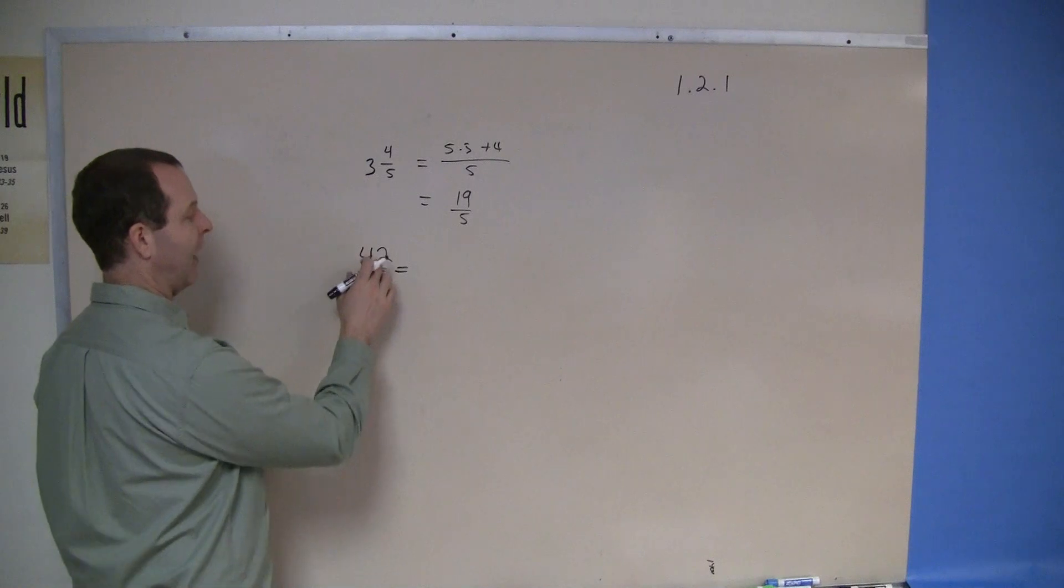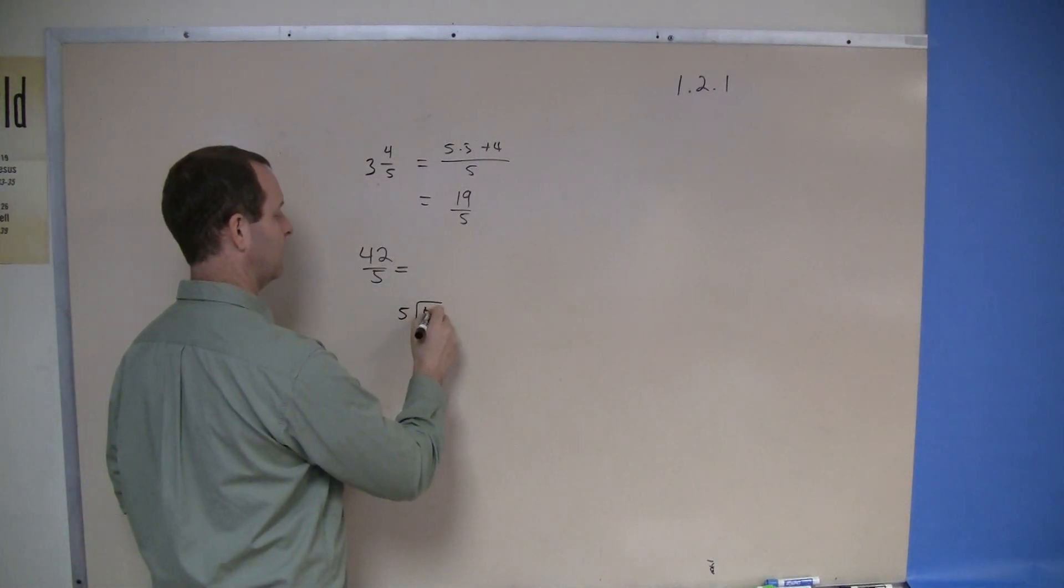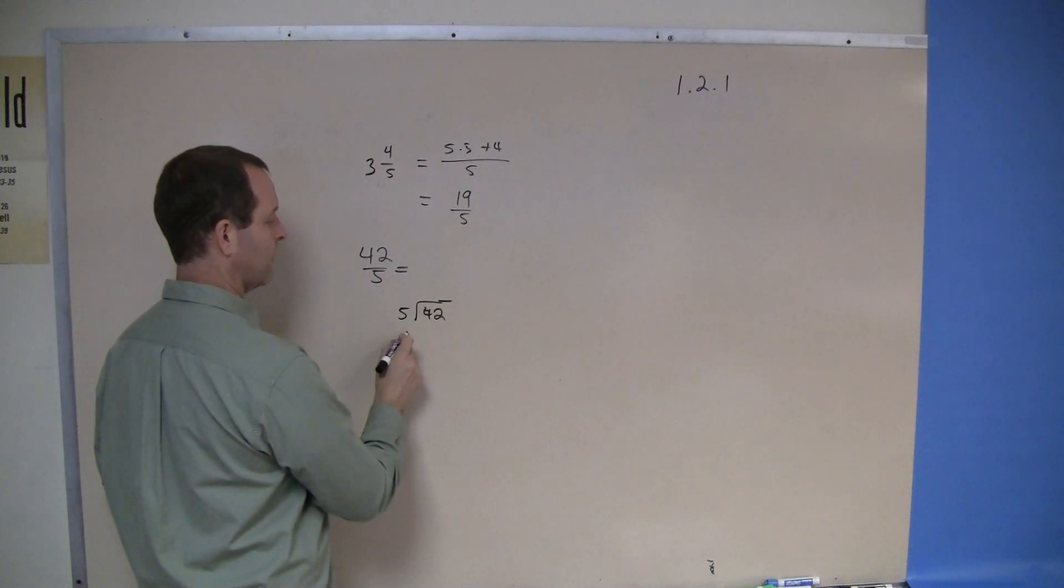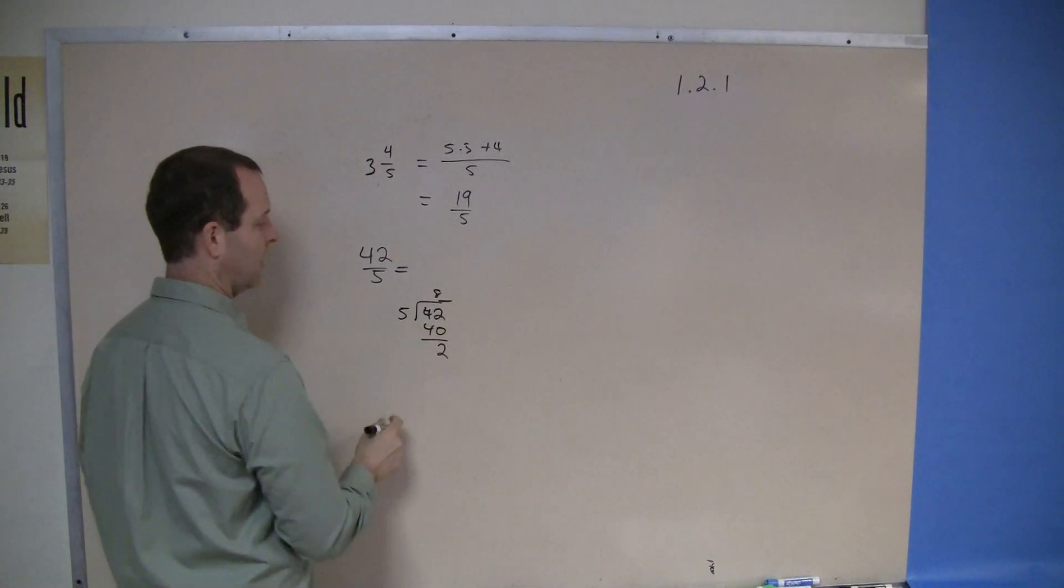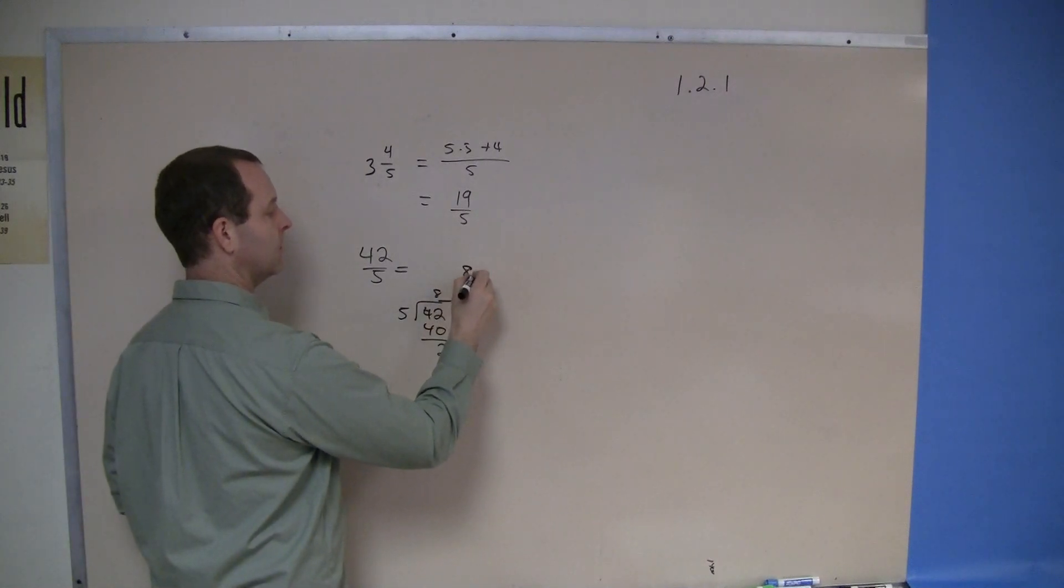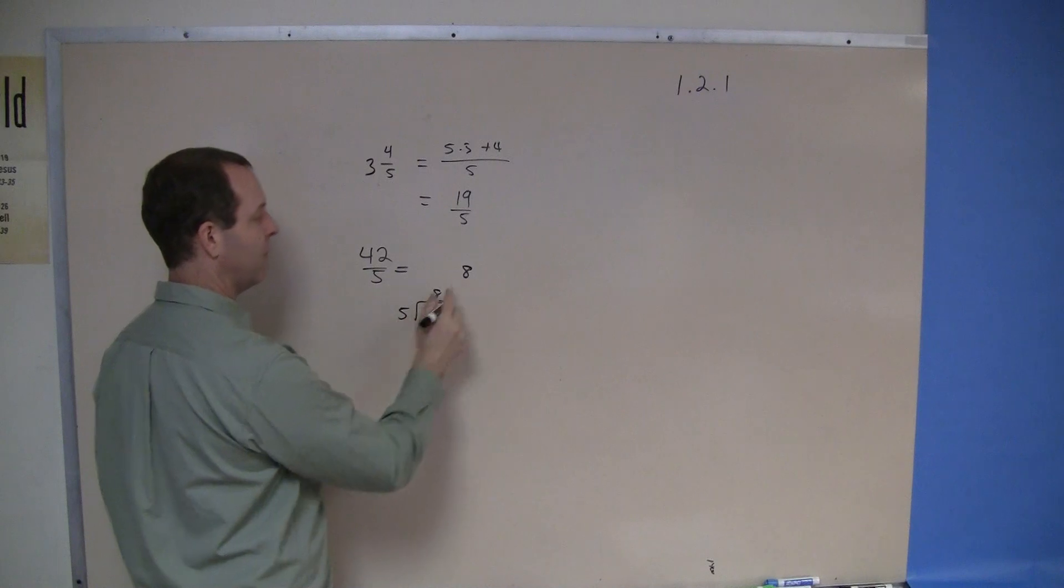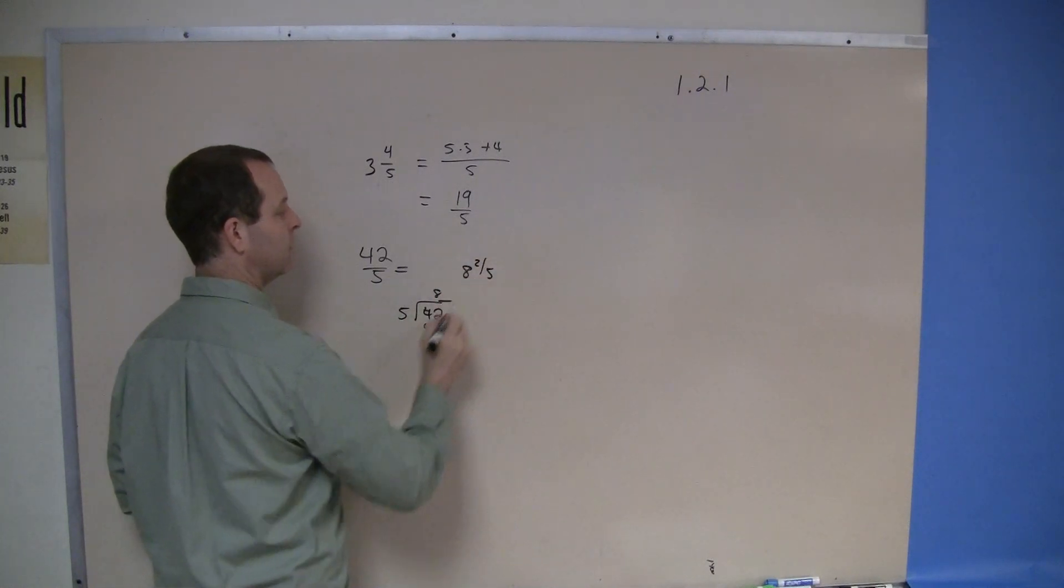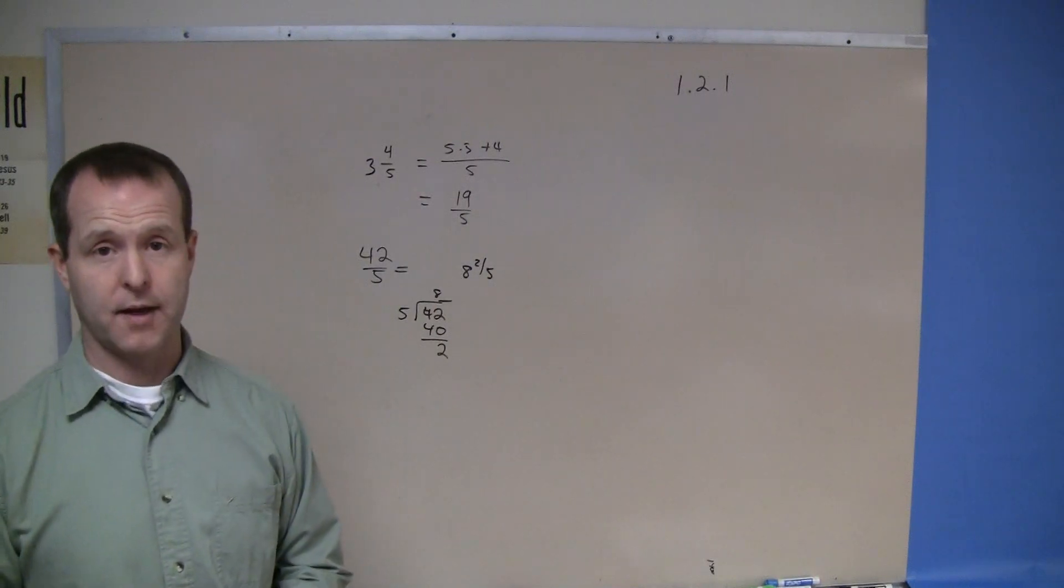So I'm going to divide 5 into 42 and that goes in there 8 times. So I have 8 and I have 2 fifths, 2 remainder of the 5 parts left over. So 42 fifths is the same thing as 8 and 2 fifths.